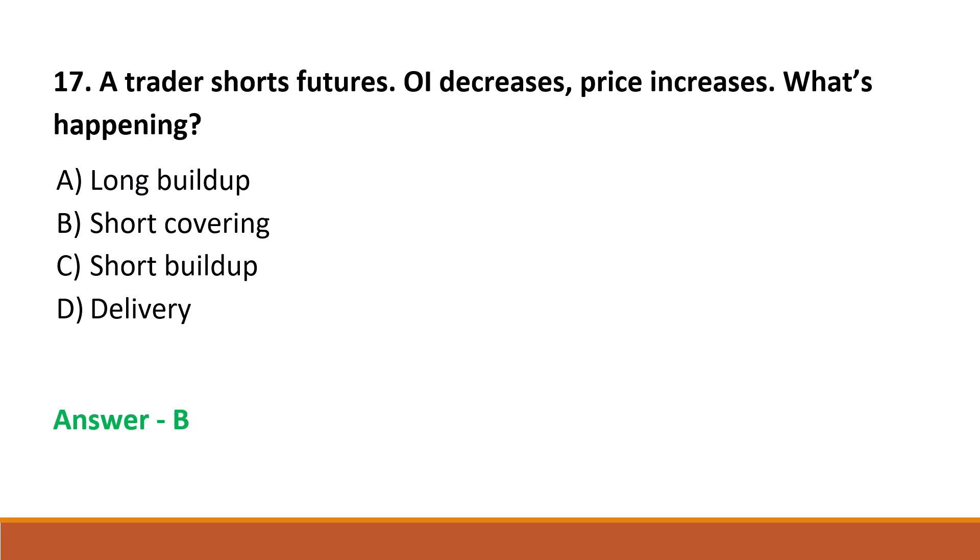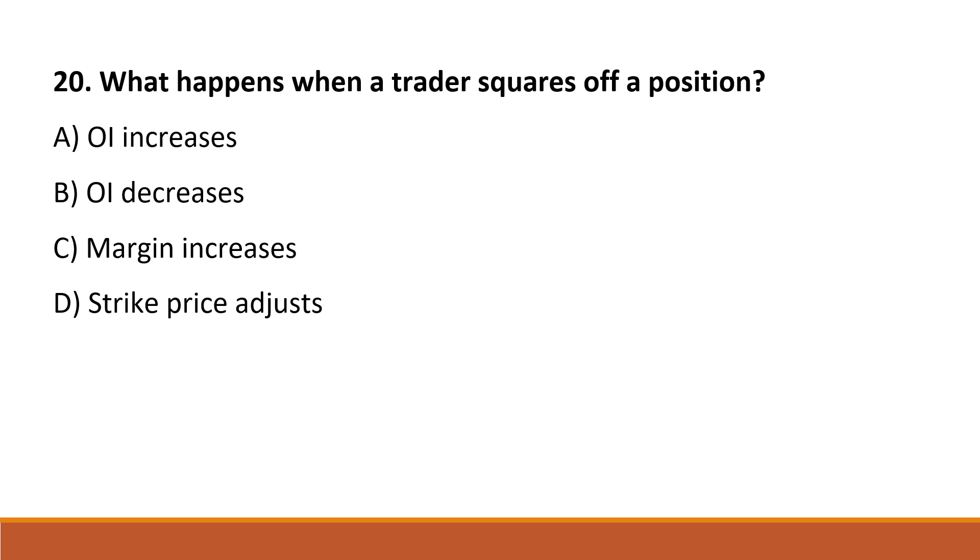Next question: what happens when a trader squares off a position? Option A: open interest increases. Option B: open interest decreases. Option C: margin increases. Option D: strike price adjusts. The correct answer is Option B, open interest decreases.